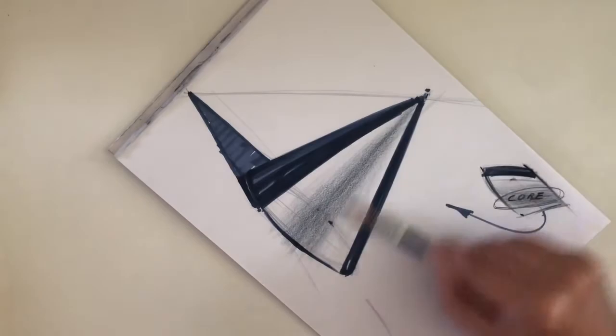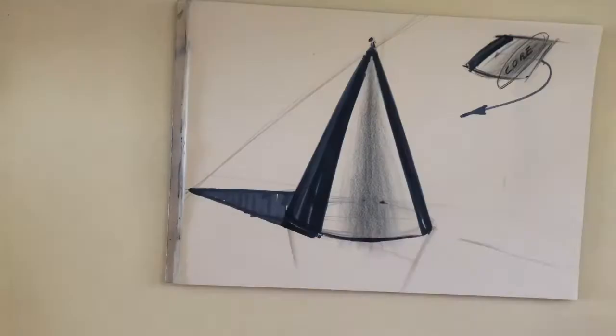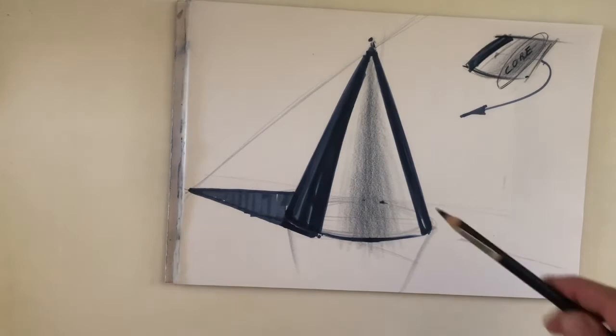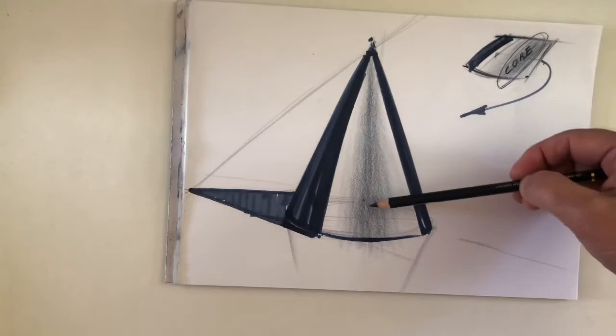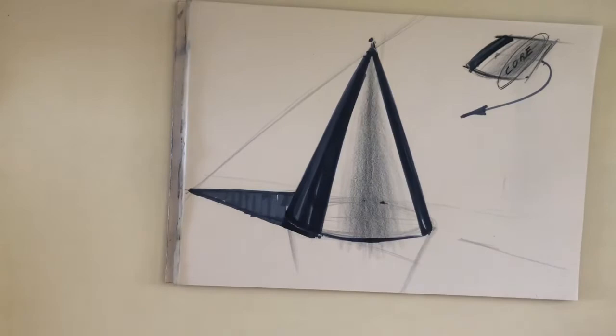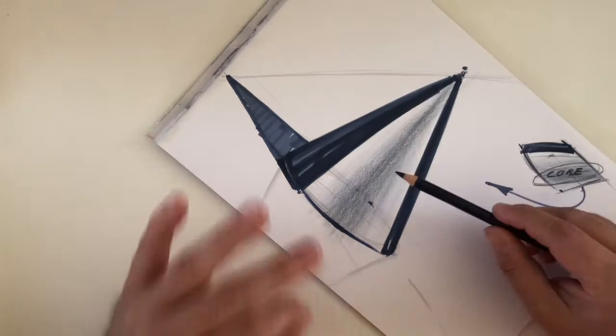Now this is not dark enough, because the rule says that this core, in its darker part, is as dark as the reflection. So I have to go over and over again to make sure that it looks really dark. And that will give the glossy reflection feeling that we have when we sketch cars.